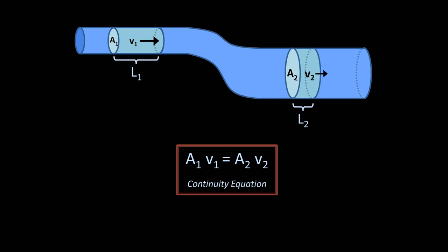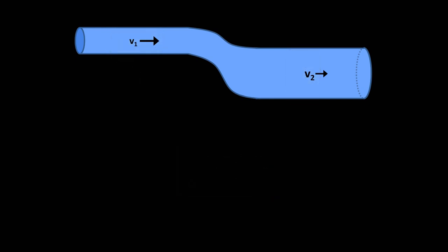For the Bernoulli equation, we're not directly interested in the cross-sectional area in each segment anymore, but rather the velocities, the pressure, and the height of the fluid above some arbitrary zero level.